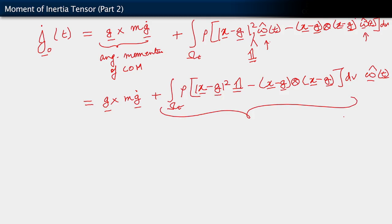This quantity here is a tensor — the first term is the second-order isotropic tensor, and the next term is a tensor product of two vectors, which is also a tensor. This tensor has a special name. We're going to denote it as a special J_g. Do you recognize it? It is the moment of inertia tensor. The subscript little g is to remind us that this is the moment of inertia tensor about the current position of the center of mass.